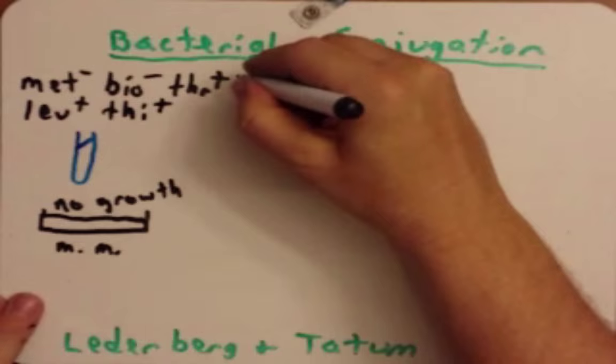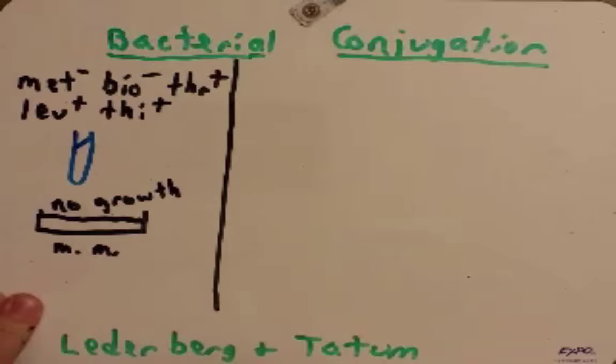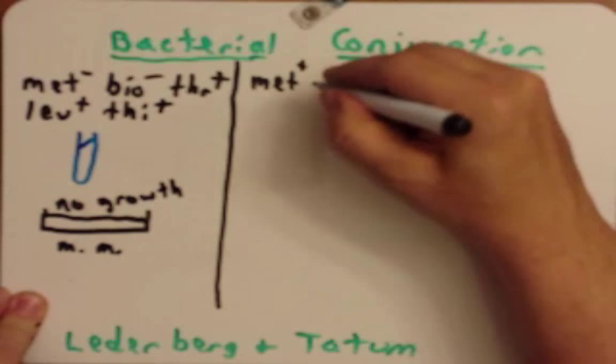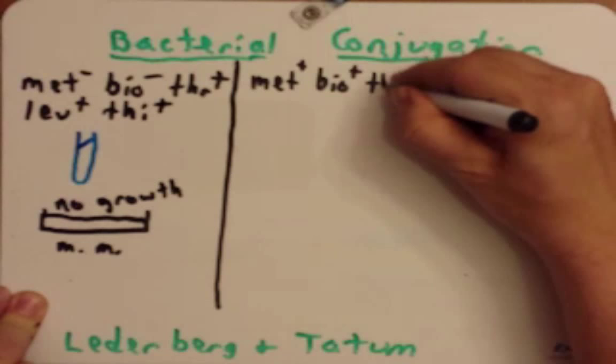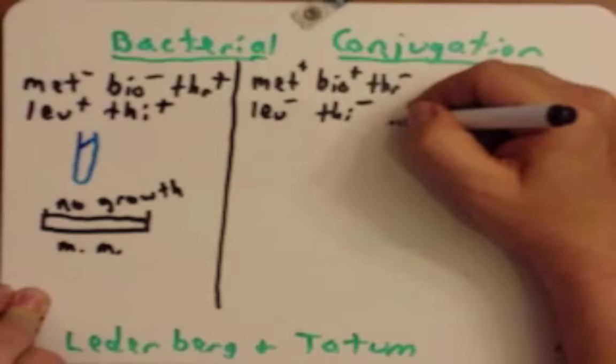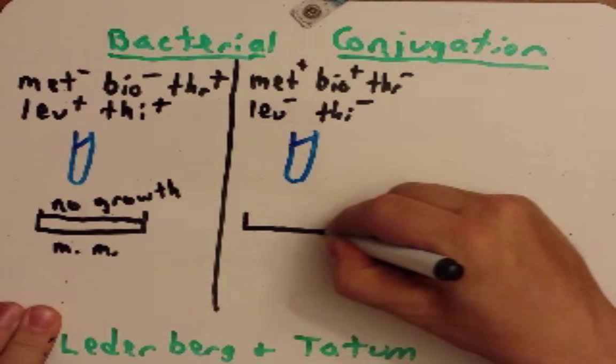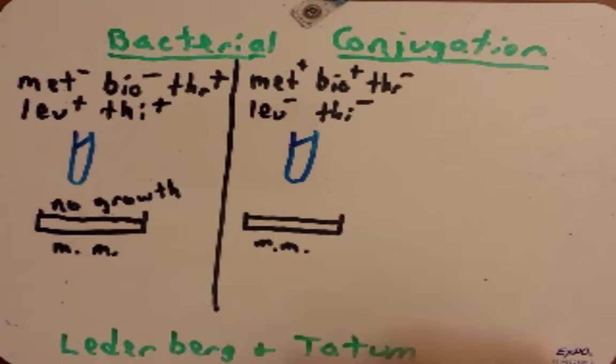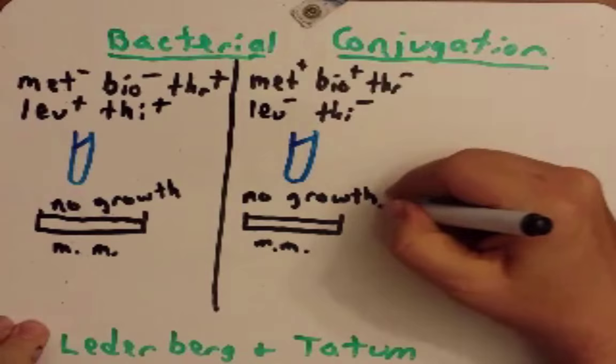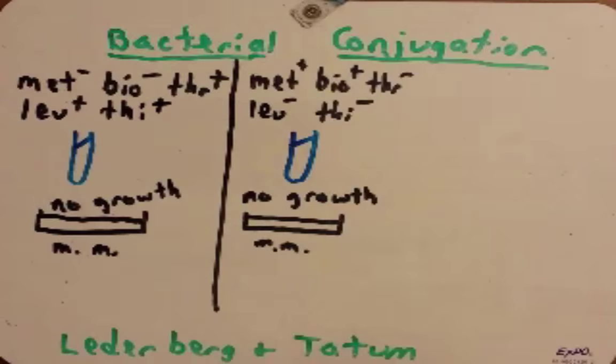They then did a separate experiment, which was the reverse: Met-plus, Biotin-plus, Threonine-minus, Leucine-minus, and Thiamine-minus. They grew that in liquid culture and plated it on the same kind of minimal media, only containing sugar, water, and salt. And again, no growth, because this bacteria is an auxotroph for Threonine, Leucine, and Thiamine.